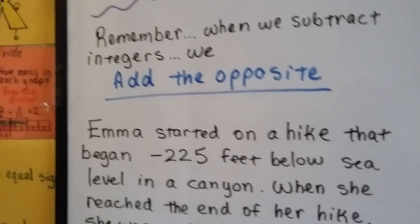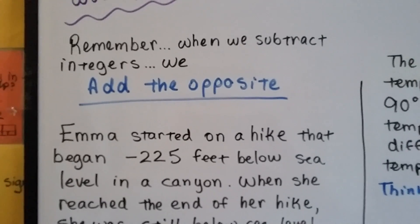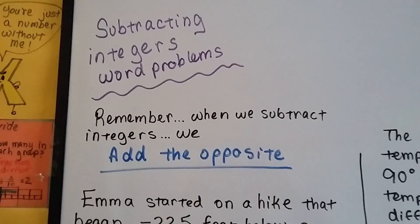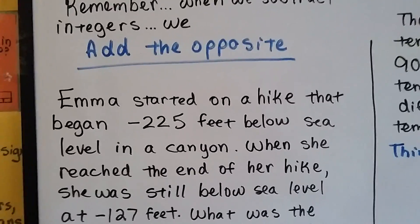Alright, so remember when we subtract integers, we add the opposite. That's what we did in our last video, number 1.3a. So, to subtract these integers in this word problem, we need to add the opposite when we get the equation.